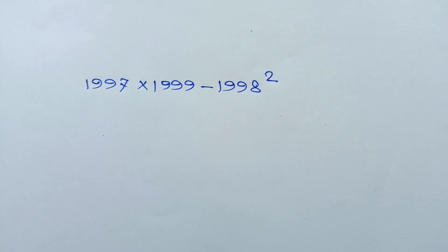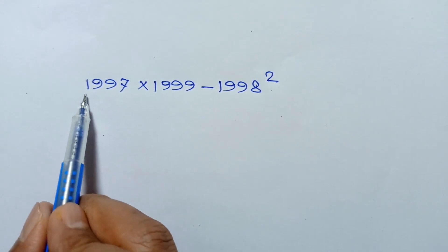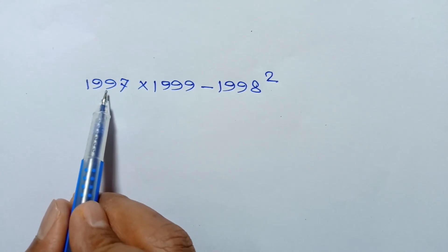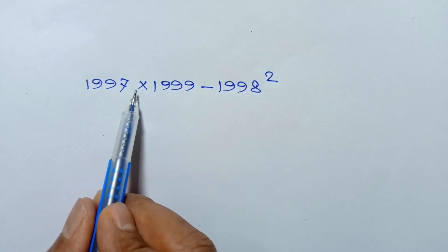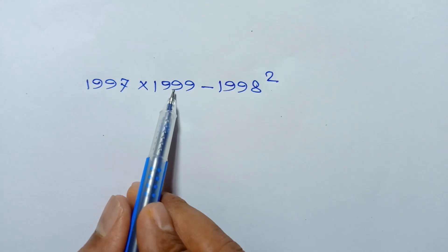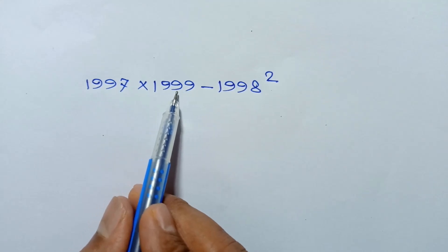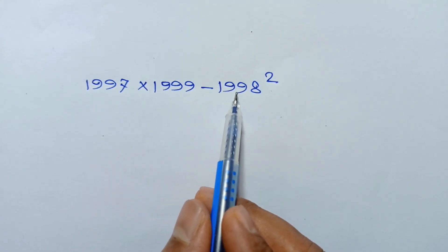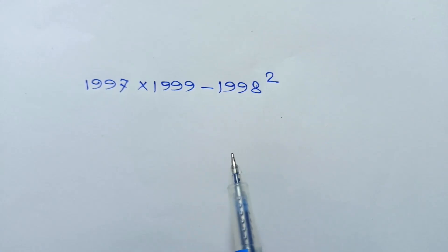Hi everyone. In this video I am going to show how to find the value of 1997 times 1999 minus 1998 squared.